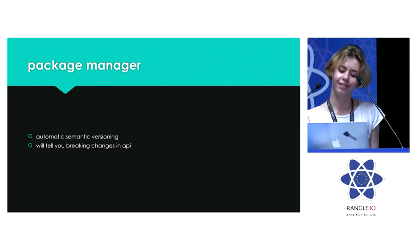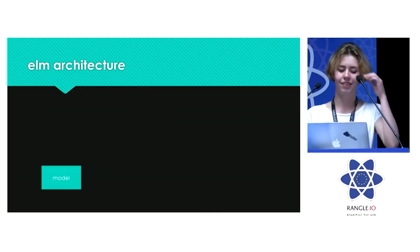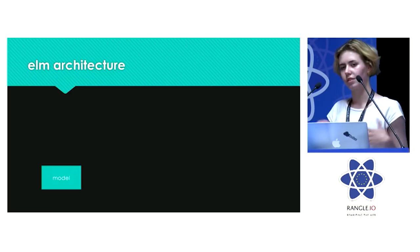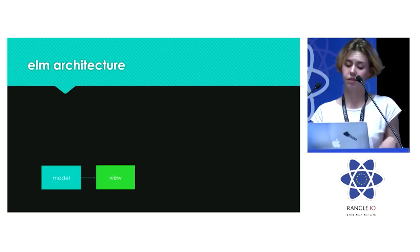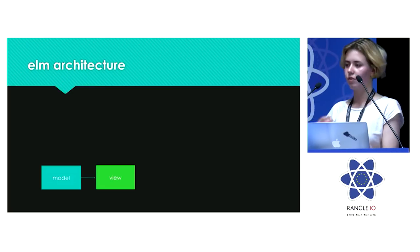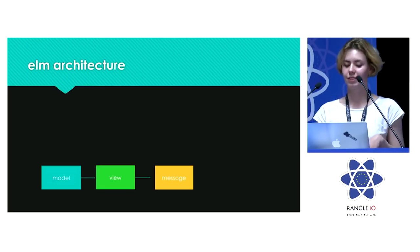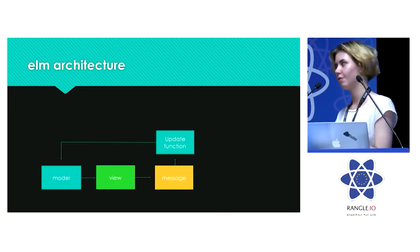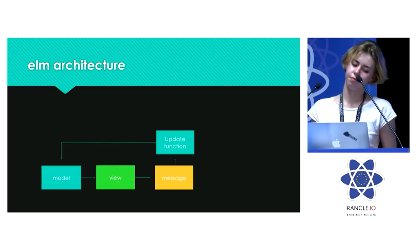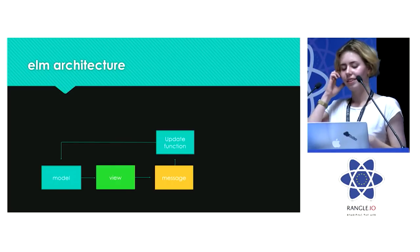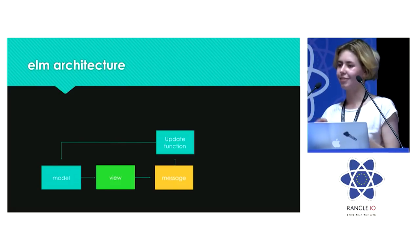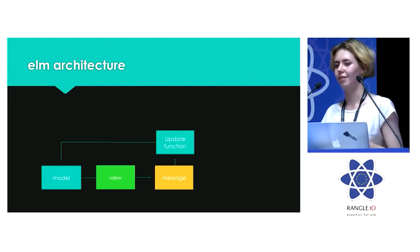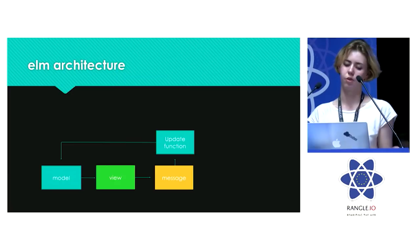Next I'm going to talk about the Elm architecture, which is basically — in React terms — you start with a model, which is basically the state, and then you put it in a view, and whenever you interact with the view, for example click or whatever, it sends a message, and then it goes into the update function, which produces a new model, and then the circle is complete. You might recognize this — it looks a little bit like Redux, except the update function is called the reducer and the message is an action. That's because Redux was actually inspired by Elm.